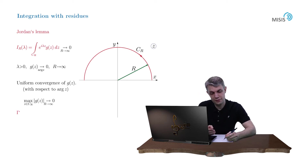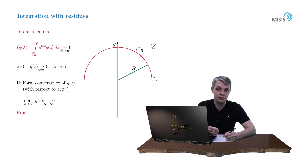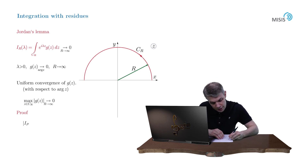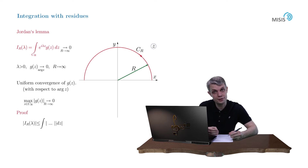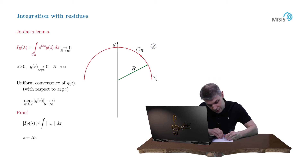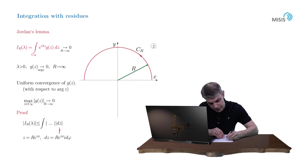Now let us prove the theorem. We need to build an estimate for our integral, and our first step is the use of the triangle inequality: the modulus of the integral is always less than the integral of the modulus. Now let us introduce a standard parameterization z equals r times e to iφ, then dz equals r e to iφ times i dφ, and substitute this change into our estimate. Our integral is then less than the following expression.